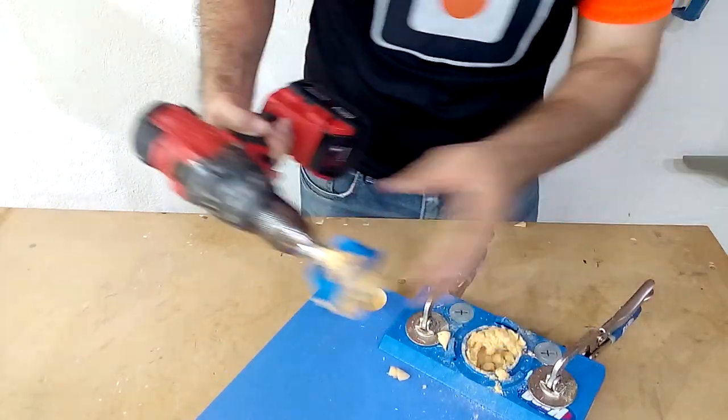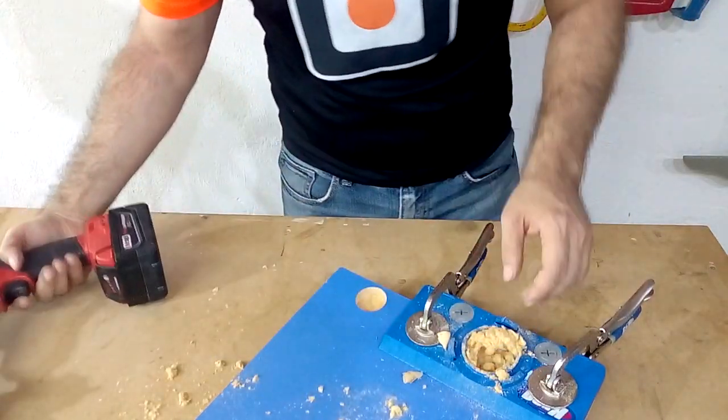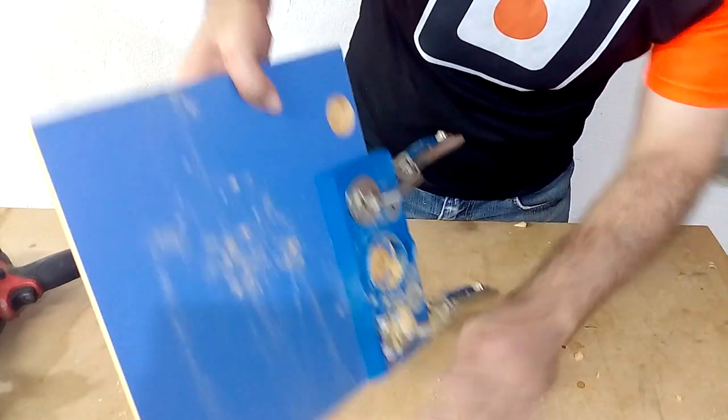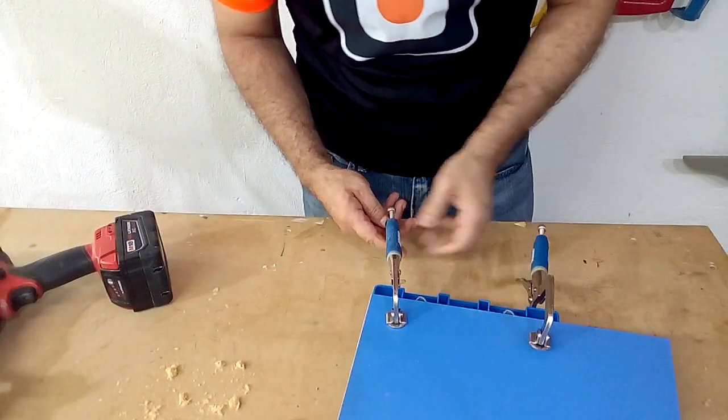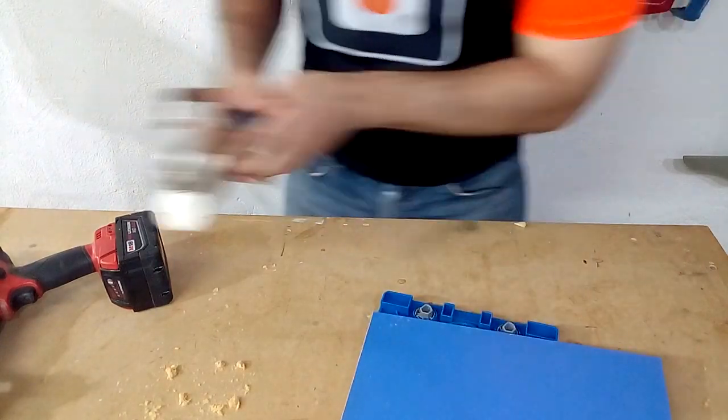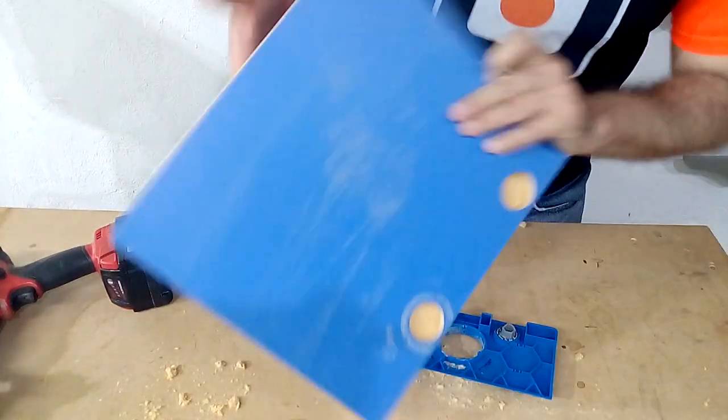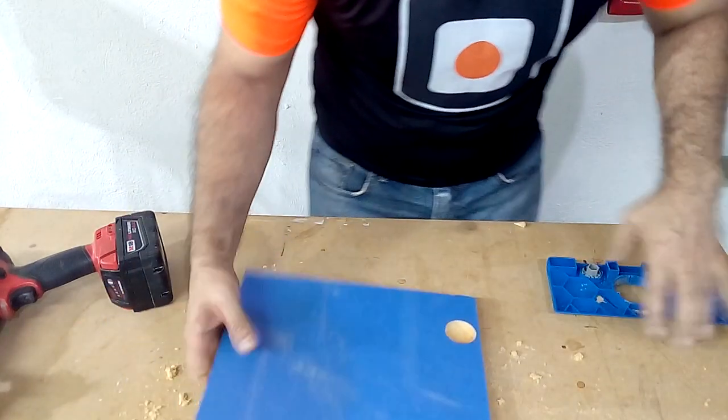At the end of the drilling, we can separate the bead and clean the sawdust remains from the template. By removing the template from the door we can verify that we made the hole to install our hinges correctly.